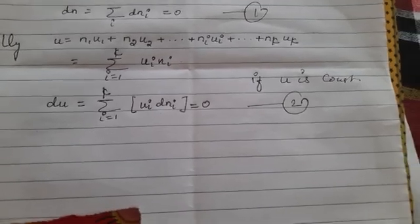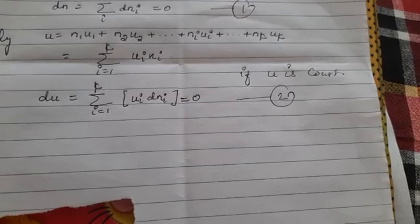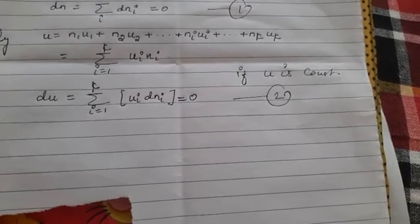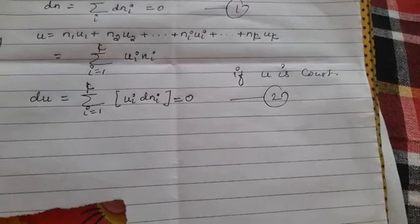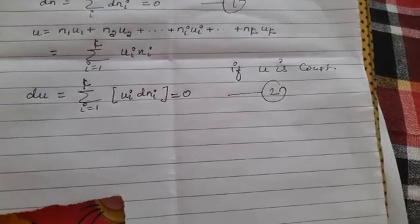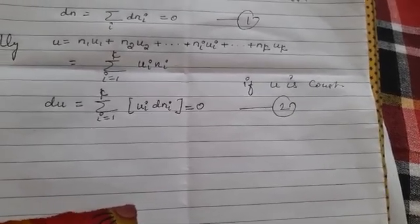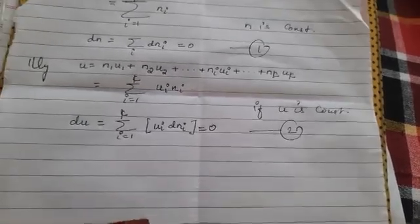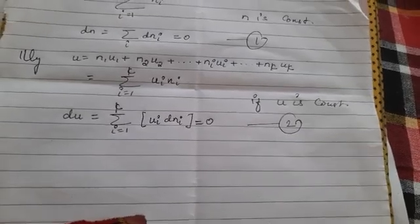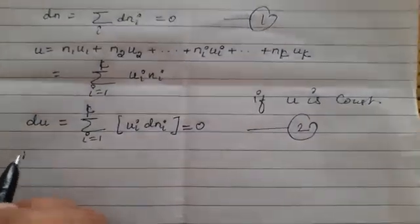Equations one and two must be satisfied by the system irrespective of the kind of statistics to be applied. We multiply equation one by minus alpha and equation two by minus beta.